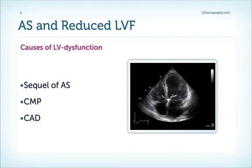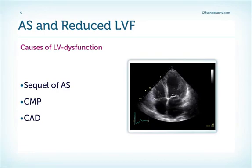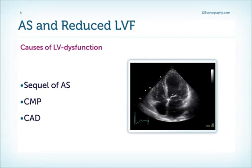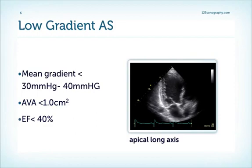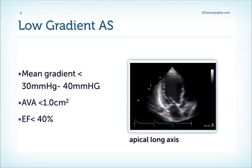If we have aortic stenosis and reduced left ventricular function, we will have lower gradients than we would expect. First, we have to consider what are the causes of LV dysfunction. Is the left ventricle reduced in its function as a sequel of severe aortic stenosis, or does this patient have cardiomyopathy or coronary artery disease leading to scarring after myocardial infarction? If we have low gradient, low flow aortic stenosis, this is defined as having a mean gradient below 30 to 40 millimeters of mercury, depending on the literature.